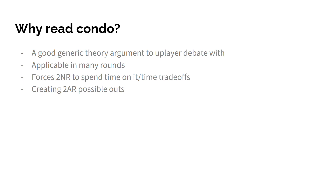It also forces the 2NR to spend time on it and creates a time tradeoff. The negative is forced to strike a balance in the 2NR between not spending too little time but also not spending too much time on the condo flow. You're basically forcing the 2NR to spend more time answering condo than the amount of time you spent in the 1AR or 2AC making the condo argument. It's also creating 2AR outs — adding other arguments always creates different avenues, which is a good thing. There's no reason why you shouldn't read condo.